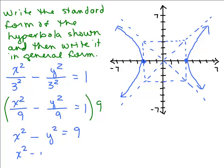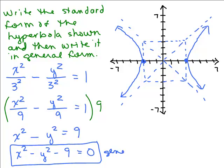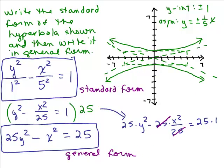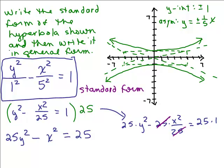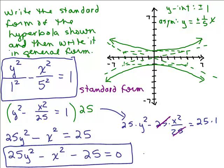Some people look at X squared minus Y squared and say that's a circle. If it was plus Y squared, it would be a circle, but this is a hyperbola because of that minus sign. On the previous problem, I forgot to set it equal to 0. The last step is 25Y squared minus X squared minus 25 equals 0. That is the general form. We've done three problems.